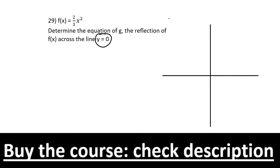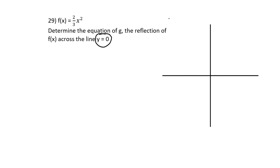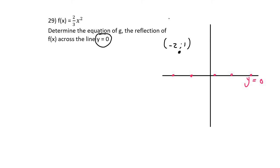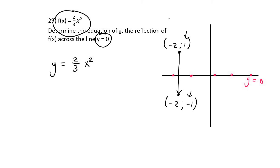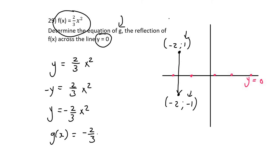The line y = 0 is the x-axis. Reflecting a point across the x-axis changes the sign of the y-value. If the coordinate is (−2, 1), reflected it becomes (−2, −1). So take the equation, write it as y equals (expression), then make y negative: −y = (expression). Get y alone by dividing by −1, and that's the answer. Since they ask for equation g: g(x) = −(expression).